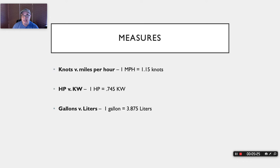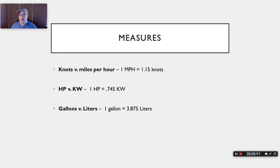Similarly, gallons versus liters: you'll see tankage listed in liters on boats from overseas since they use the metric system. One gallon equals 3.785 liters. You'll see this not only in tankage but in fuel efficiency — they'll list liters per hour burned instead of gallons per hour. It's easy to misread: if a boat burns 40 liters an hour that sounds like a lot, but divide by 3.785 and it's much more reasonable. Just something to be aware of.